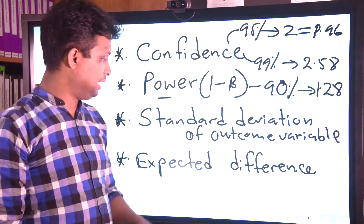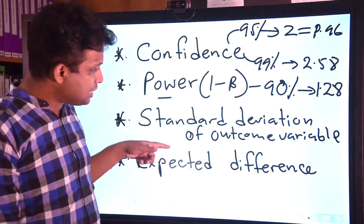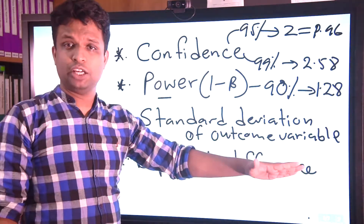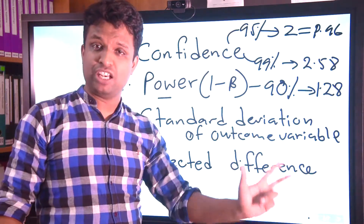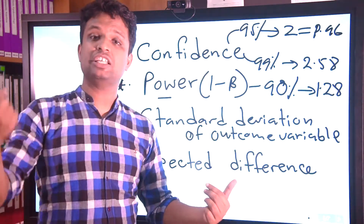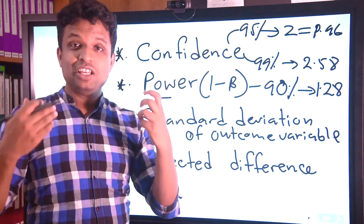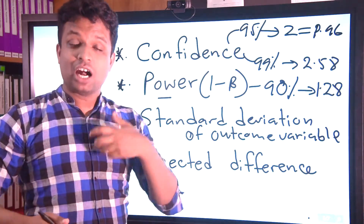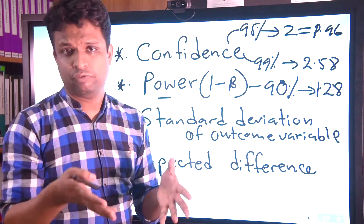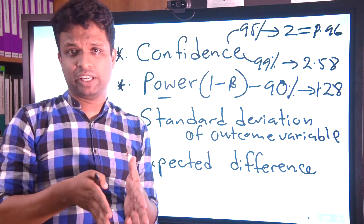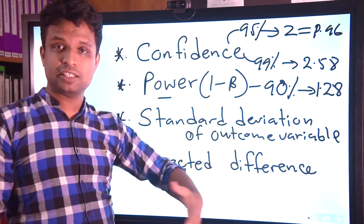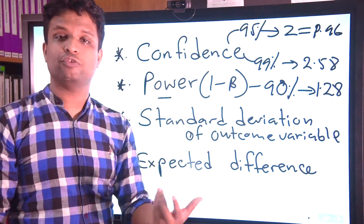The next most important factor is the standard deviation of the outcome variable. As I discussed in lecture 59, variability affects sample size: if you need to capture higher variability, you need a higher sample size; if variability is lower, the sample size will be lower. The standard deviation is the square root of variance, so here we are interested in the variance of the outcome variable.